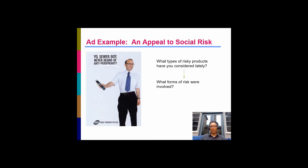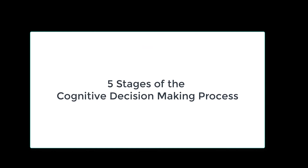This slide gives an ad example of a deodorant company appealing to social risk. Think about it for yourself — what types of risky products have you considered lately, and what types of risks came up for you as you were cognitively evaluating that purchase? Take a minute and reflect on that.